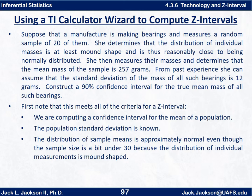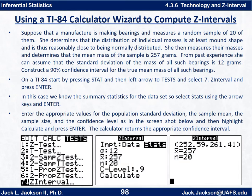The population standard deviation is known. Again, that's good. And the distribution of sample means is approximately normal even though the sample size is a bit under 30, and that's okay because the distribution of individual measurements is mound shaped. The distribution of sample means is going to be approximated well by a normal distribution. So those are the three criteria we need for a z-distribution.